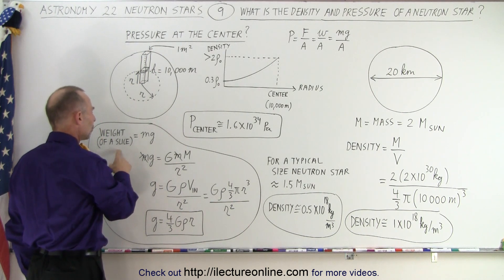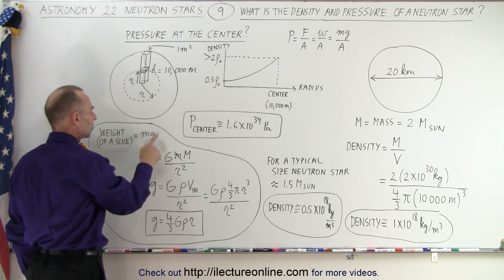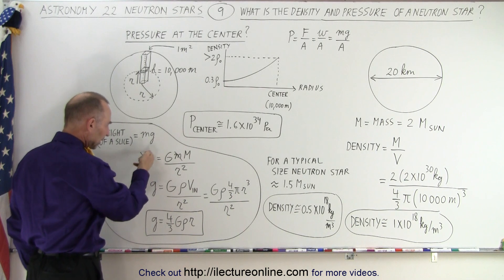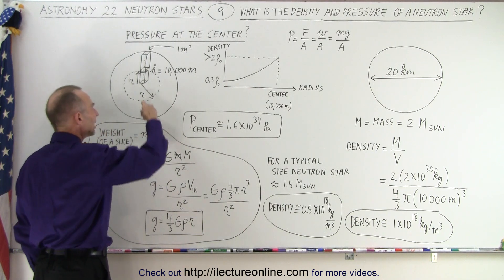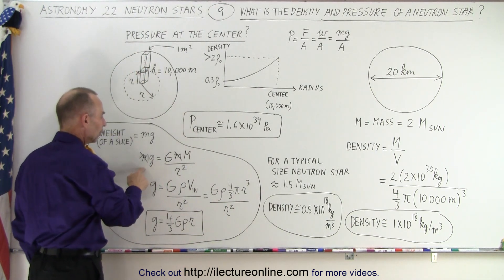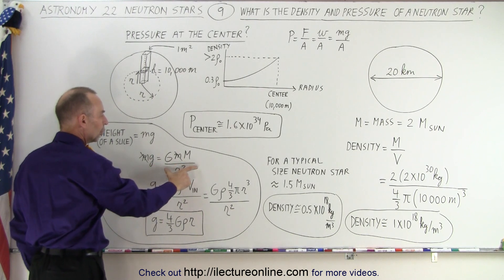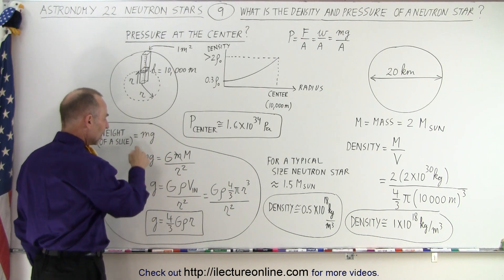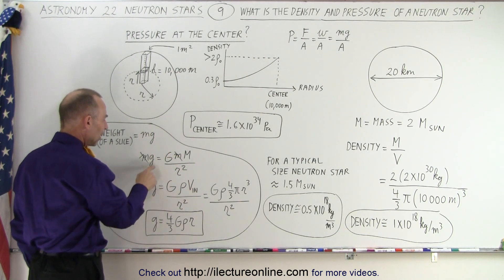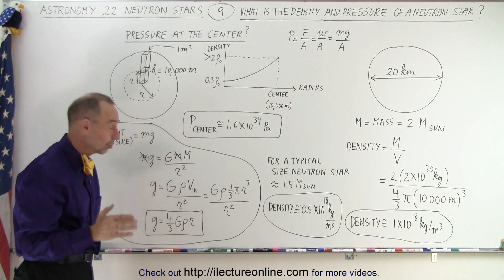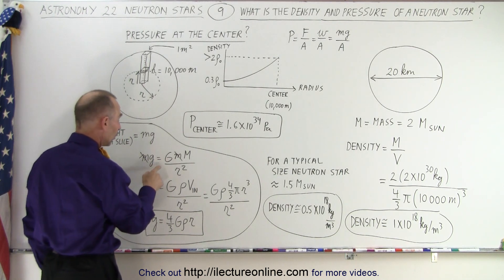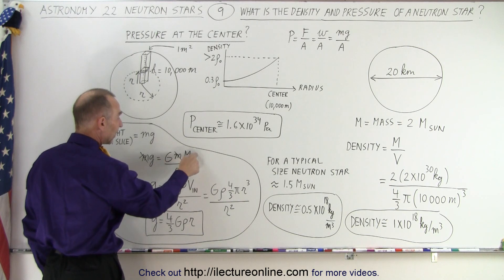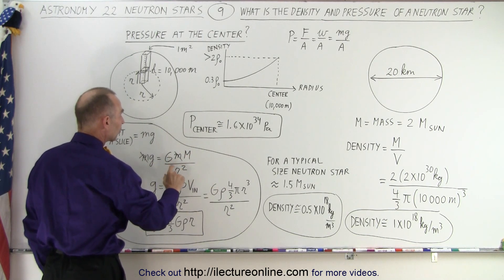If you then think of it that the weight of a slice would be its mass times acceleration due to gravity, and we want to calculate the acceleration due to gravity anywhere along that column, we simply set the weight equal to Newton's law of gravity. The mass of the slice cancels out, and we calculate the acceleration due to gravity. And notice that we have g equals G times the mass of the neutron star divided by the radius.